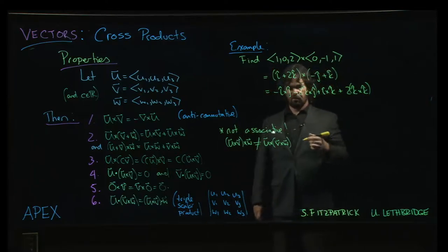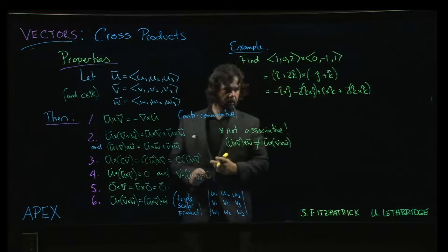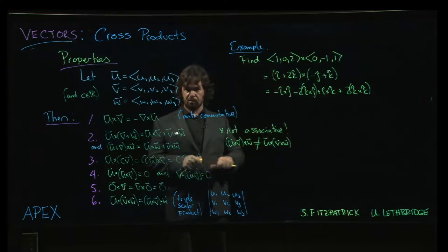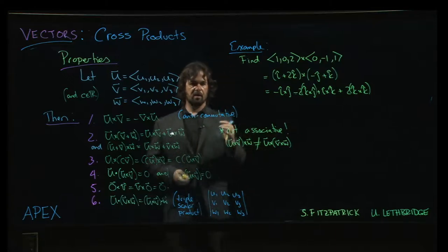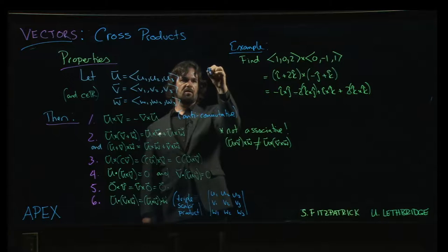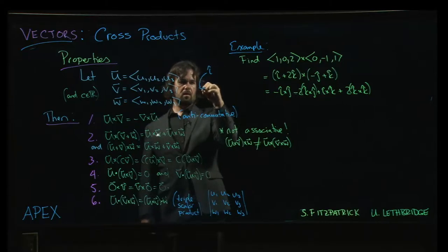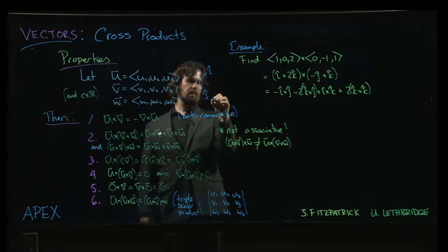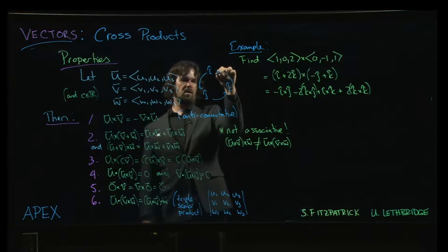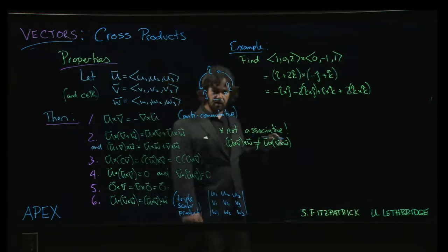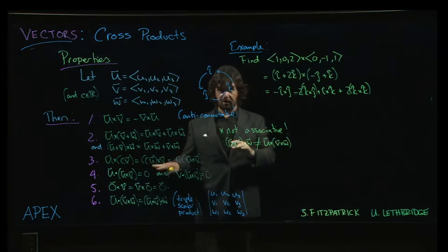And that leaves us with just needing to know how to compute cross products of those sort of standard unit vectors. And it turns out there's kind of, this is how I like to remember it. Think about sort of i, j, k. And you can work these out for yourself. It's a very straightforward exercise using the definition of the cross product.